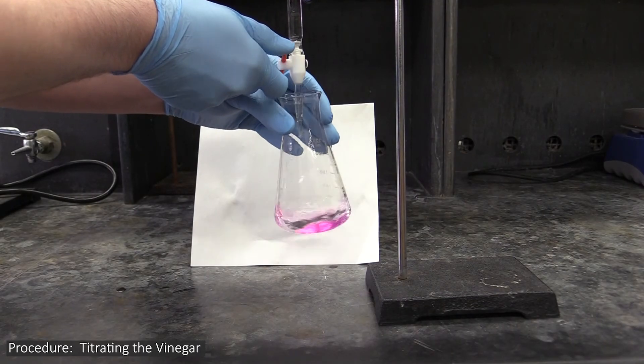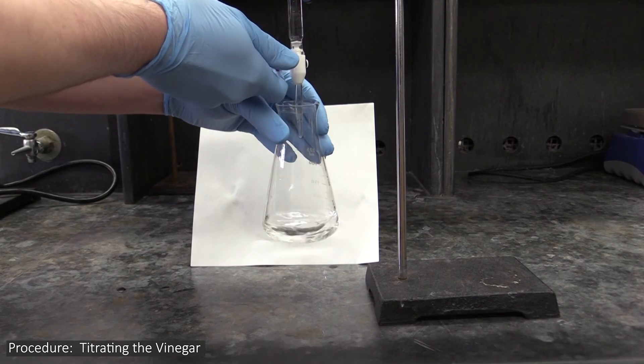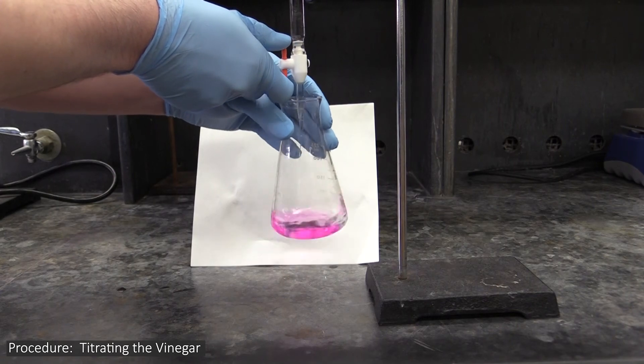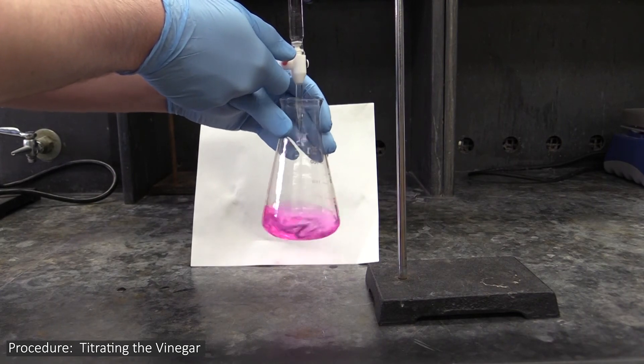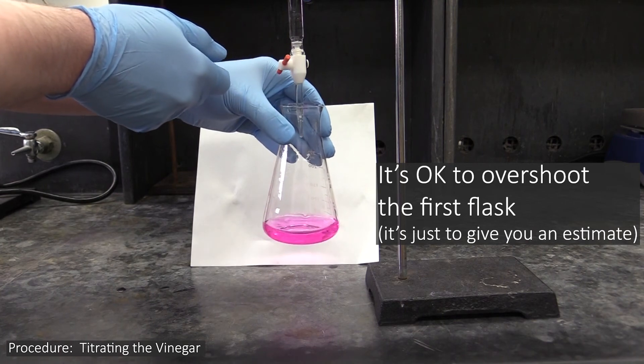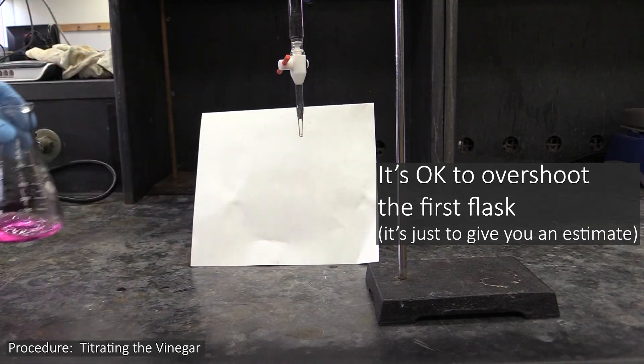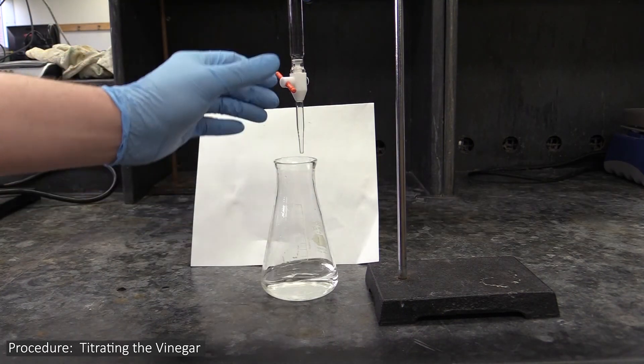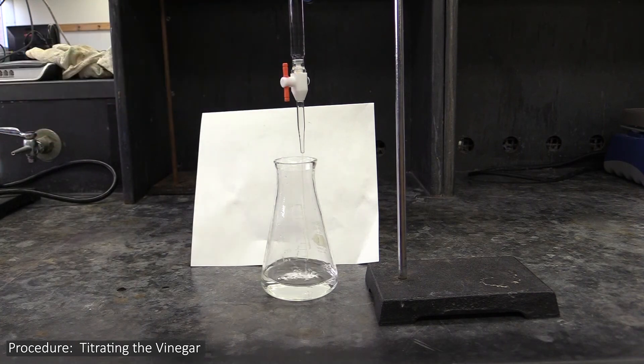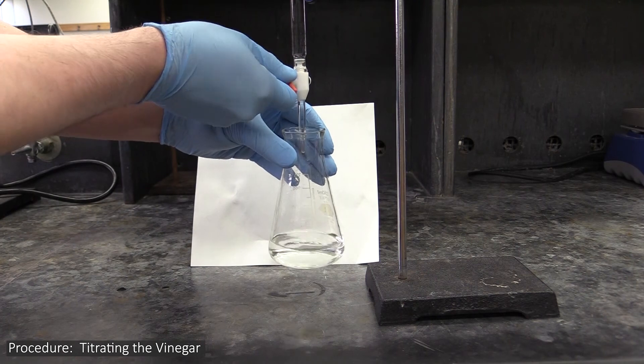Titrations can be slow, but there is one thing you can do to make this experiment go a little bit quicker. Don't try and be super careful with the first flask you titrate. Do it quickly to give yourself a rough idea how much titrant you'll need. Once you know that, on the subsequent flasks, you can crank the burette valve wide open to bring them close to the endpoint, and then go very slowly and carefully from there.